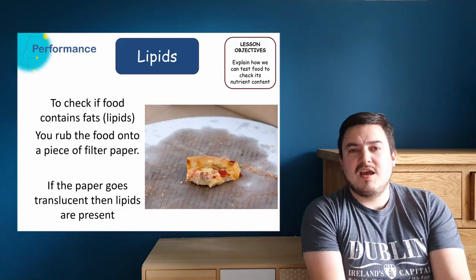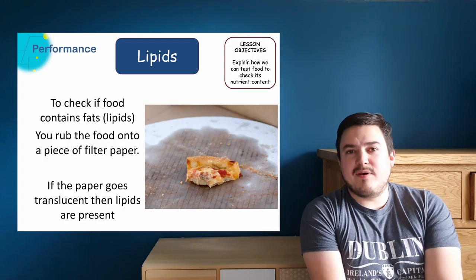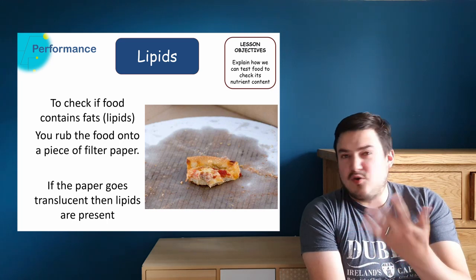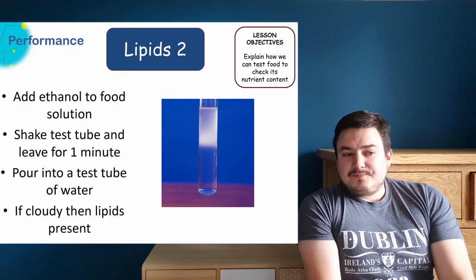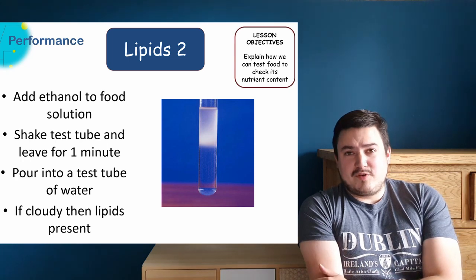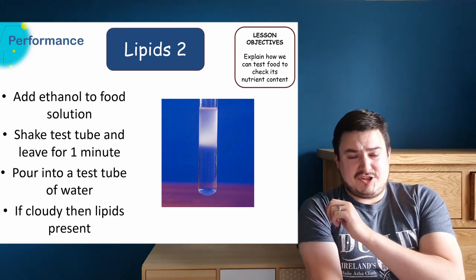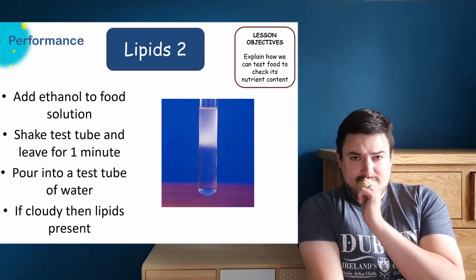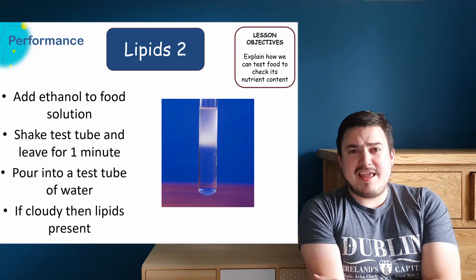There are two tests you can do for fats, also called lipids. First, if you get a fatty food and rub it onto filter paper, the filter paper will go from its normal white color to completely see-through. You can also mix the food with ethanol, shake it in a test tube for a minute, then pour it into a test tube of cold water. If fat is present, the mixture will go a cloudy white color, as shown in the image.